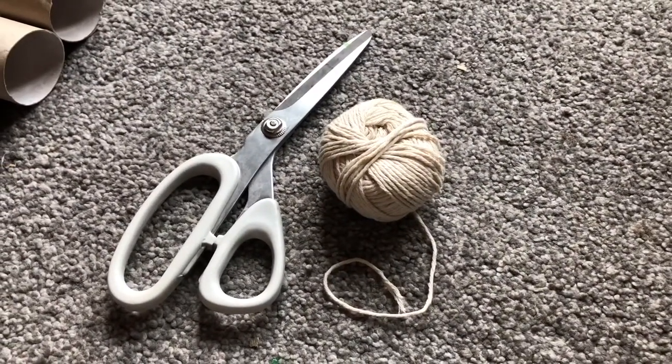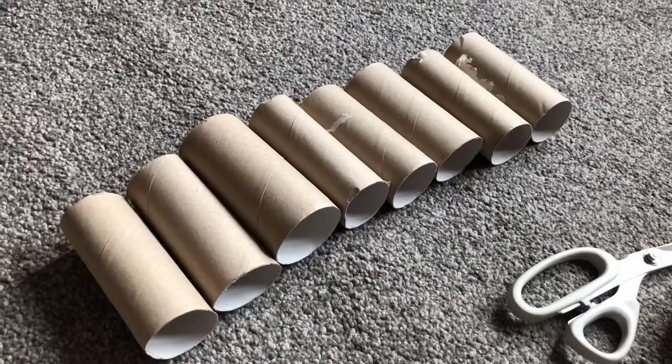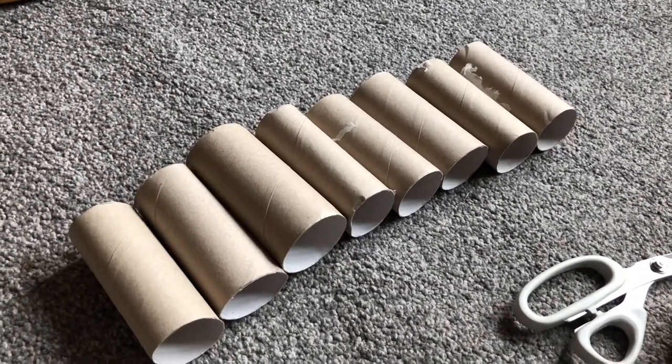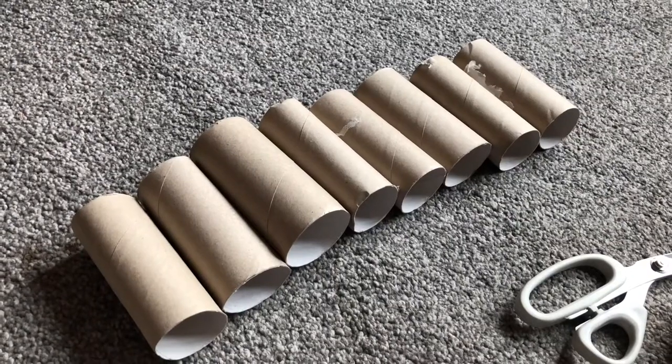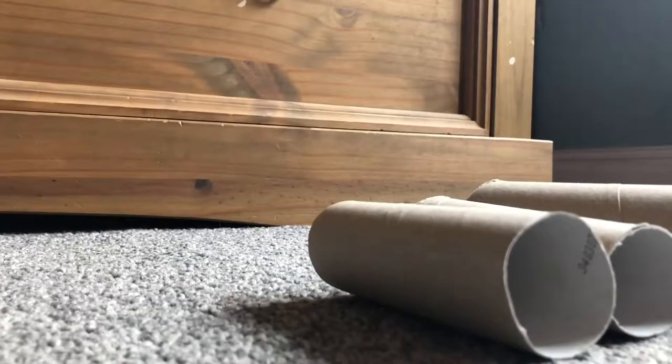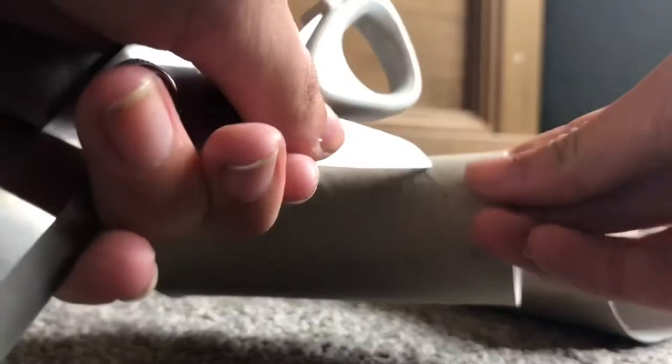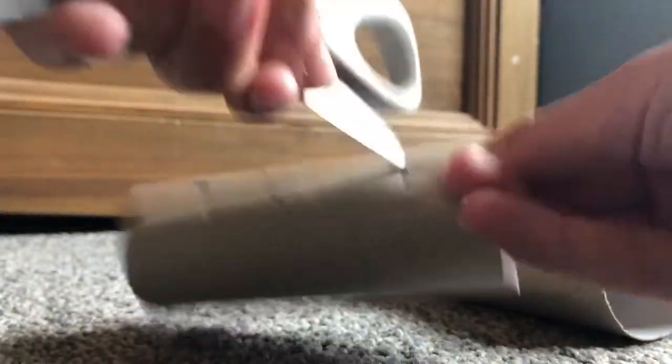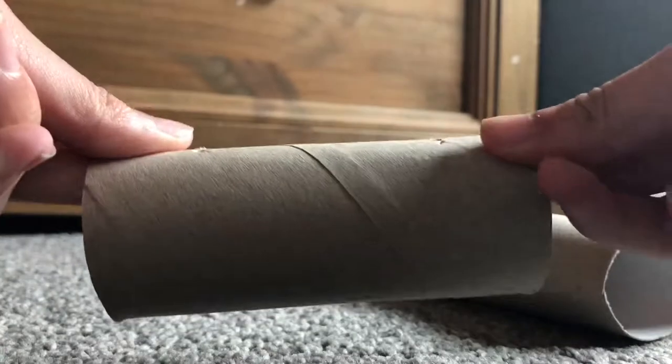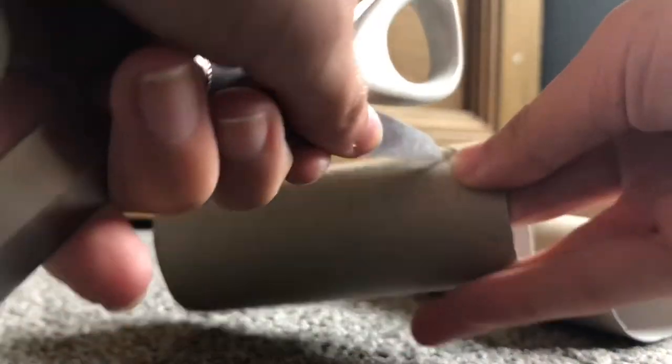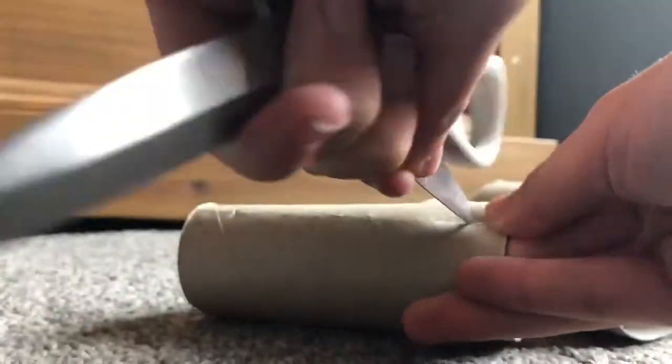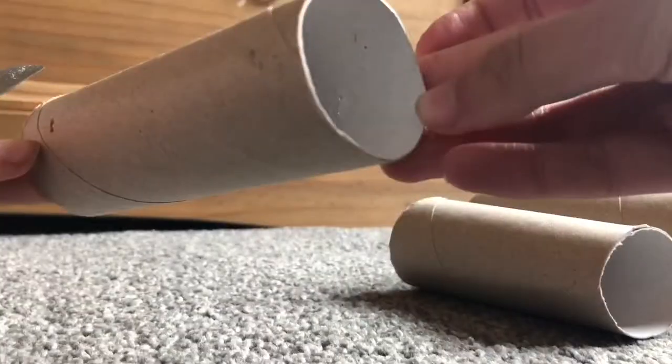You will also need some toilet roll tubes. I have eight here, and it depends on how big you want your bridge to be. Don't put the holes too near to the edge of the toilet roll tube or it might split.